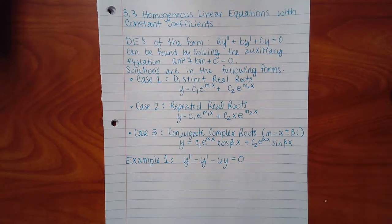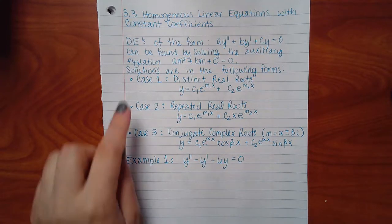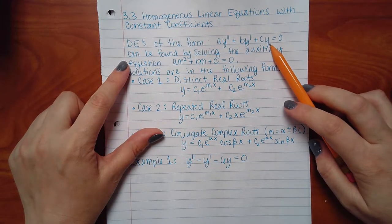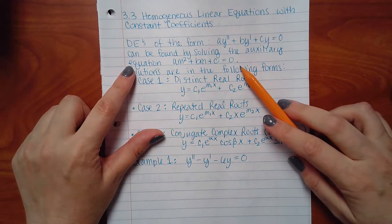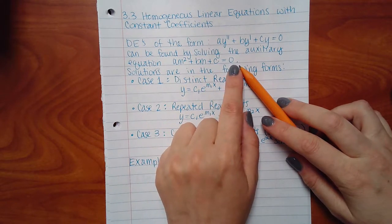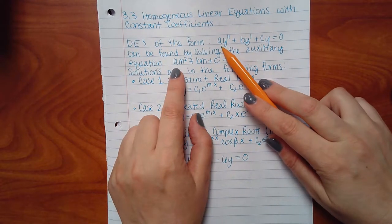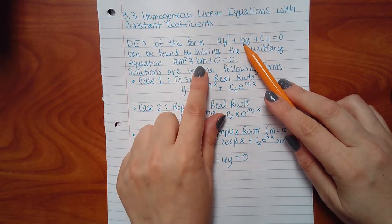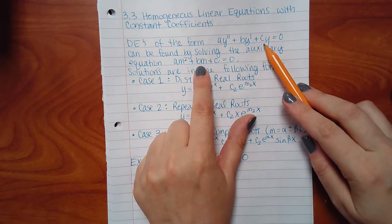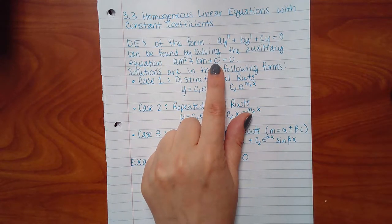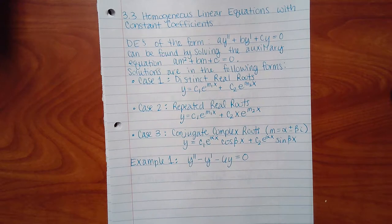Notice what the theorem says: you find solutions to the DE by solving the auxiliary equation, which is just a quadratic equation. The coefficient in the DE corresponds to the coefficient for m squared, the next coefficient is for m, and then the constant term of that quadratic. Once you solve this quadratic, there are only three types of solutions you can get.